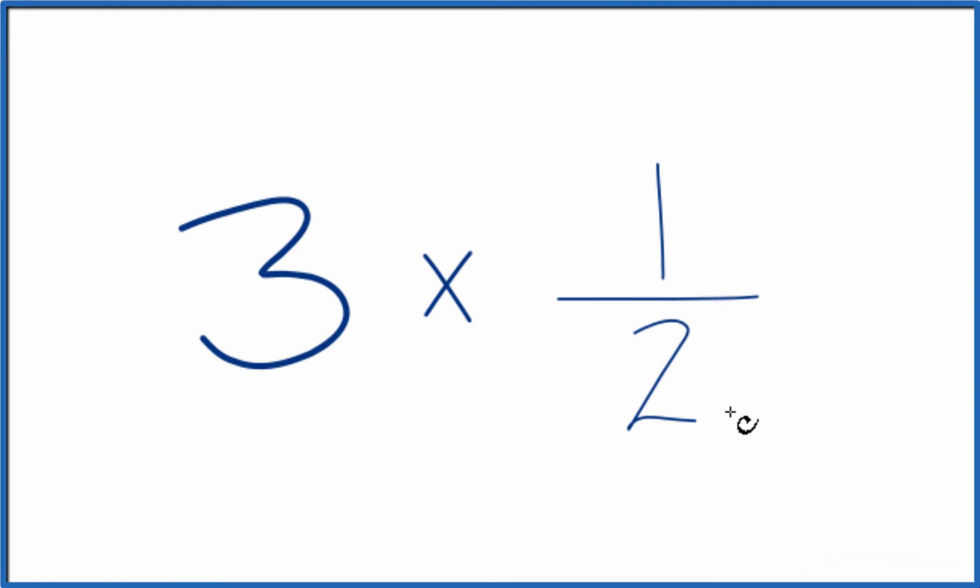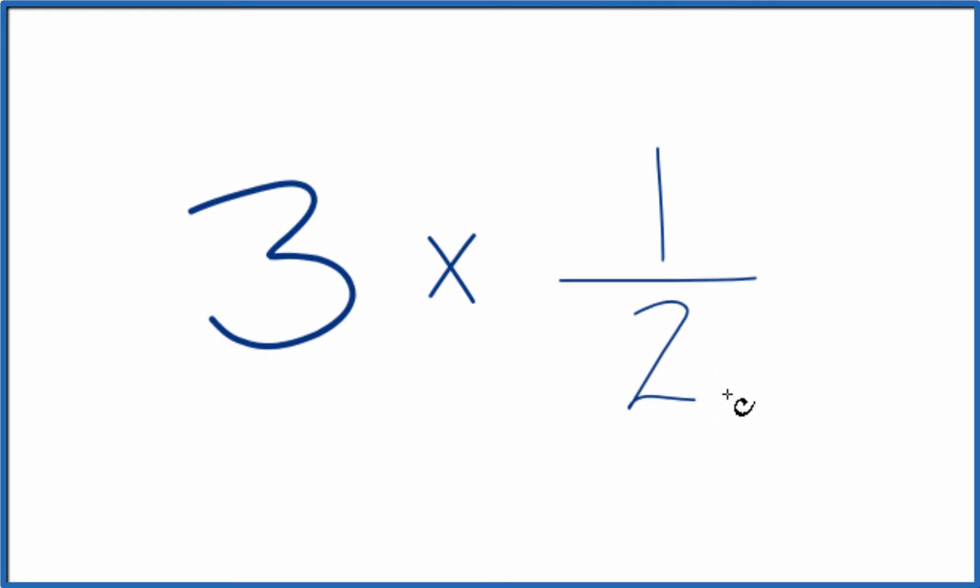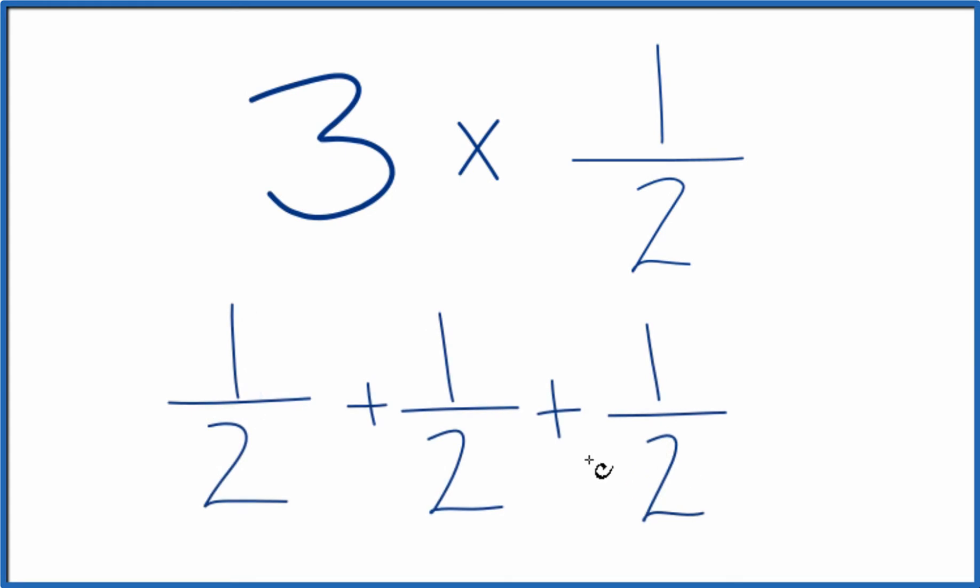So we could just add 1/2 plus 1/2 plus 1/2, like this. So we have our one, two, three - three one-halves, three times one-half.